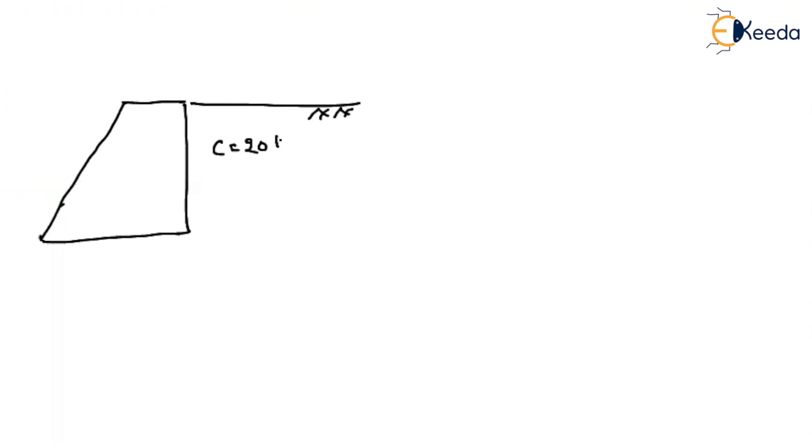cohesion will be equal to 20 kilonewton per meter square, phi will be equal to 30 degrees, gamma will be equal to 20 kilonewton per meter cube. And the height of the retaining wall, let us consider it as 4 meters, and in addition to that, we are having some surcharge on the top of the soil with magnitude 20 kilonewton per meter square.